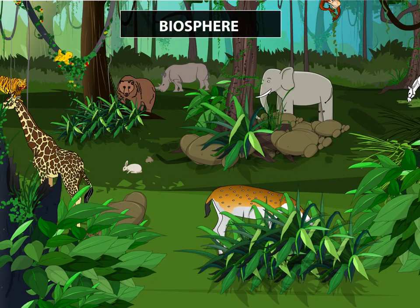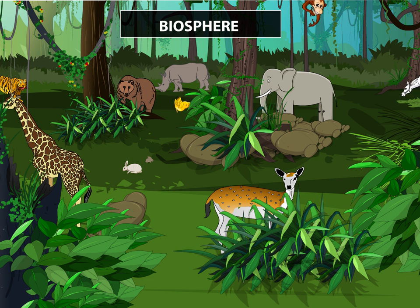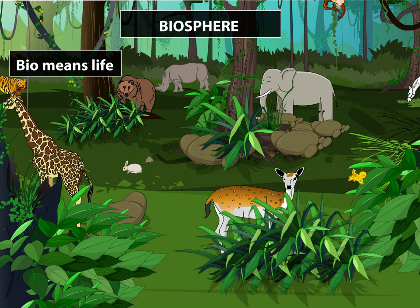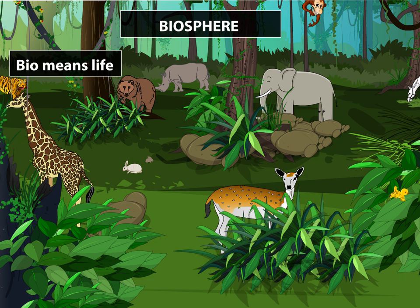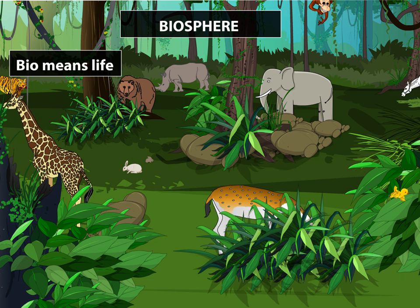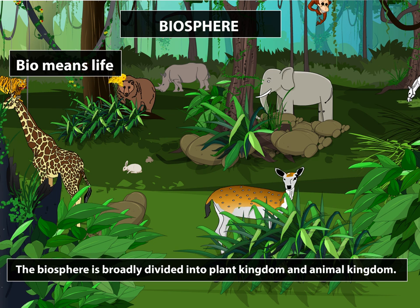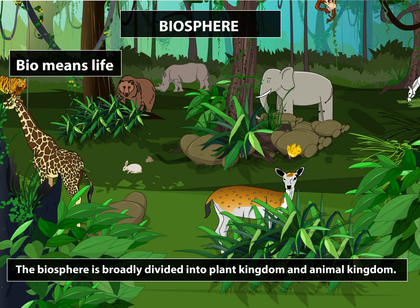The fourth major domain of the Earth is Biosphere. Bio means life. It is the biosphere that contains all the three domains — that is land, water and air. The biosphere is broadly divided into plant kingdom and animal kingdom.